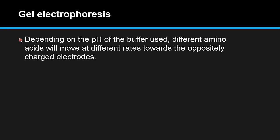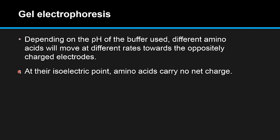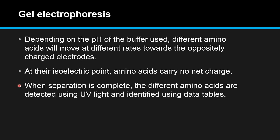Depending on the pH of the buffer used, different amino acids will move at different rates towards the oppositely charged electrodes. At the isoelectric point, amino acids carry no net charge. When separation is complete, the different amino acids are detected using UV light and identified using data tables.